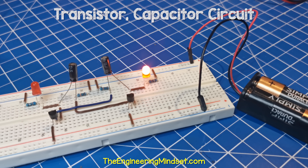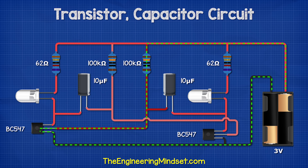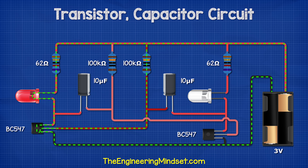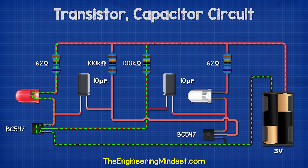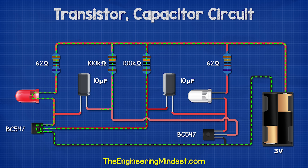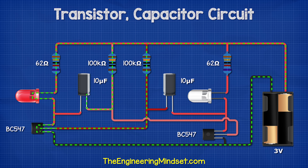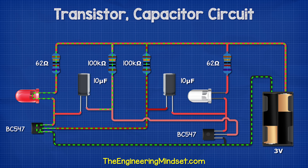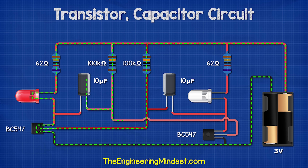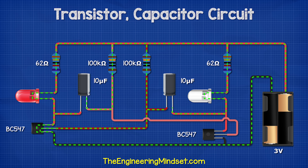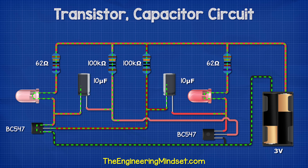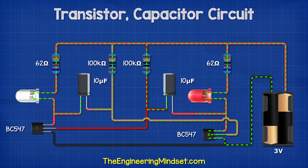So what's happening here? When we connect the power supply, the current is going to flow through resistor 3 and into the base pin of transistor 1. This will turn the transistor on and so a current can then flow through resistor 1 and LED 1. This causes electrons to be pulled into capacitor 1 through resistor 2 and build up on the right-hand side. When the voltage of capacitor 1 reaches 0.7 volts, this will open the base pin of transistor 2 and turn it on, allowing current to flow through resistor 4 and LED 2, which causes electrons to be pulled into capacitor 2 through resistor 3. This causes transistor 1 to turn off.